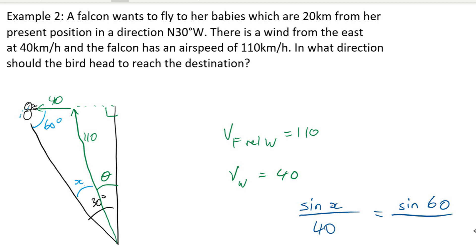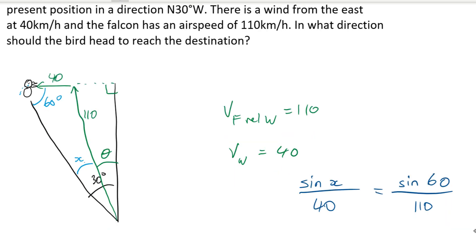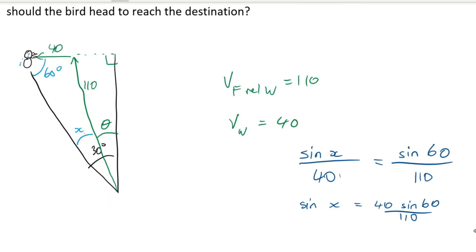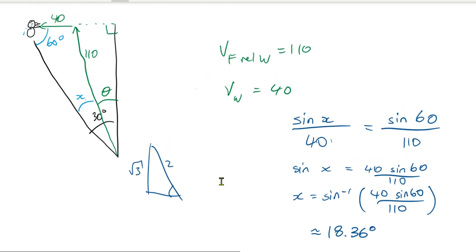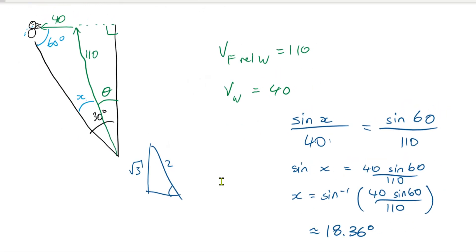Do you guys remember this, the sine rule? So how do we get the 40 on the bottom over? Times. So now we do the inverse of sine to both sides, and we type all of that into our calculator. So putting it into the calculator, thank you. 18.36, and we minus that away from 30, and we get theta.